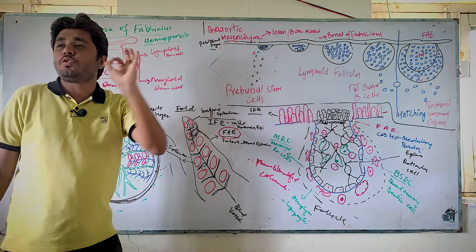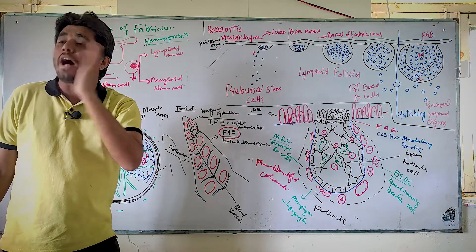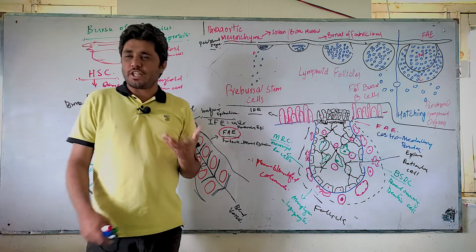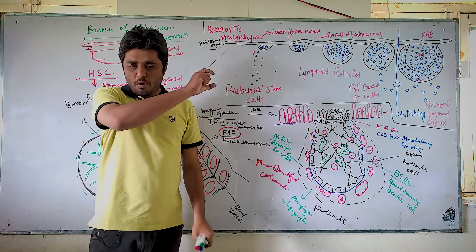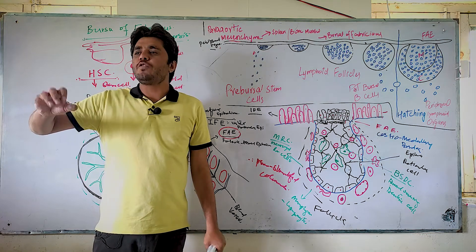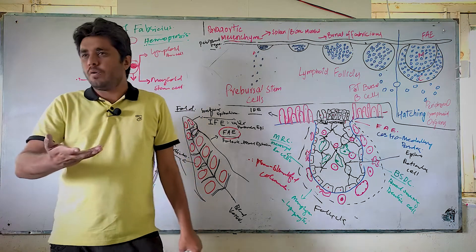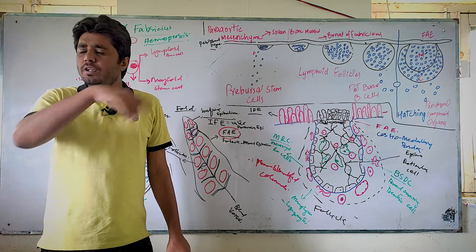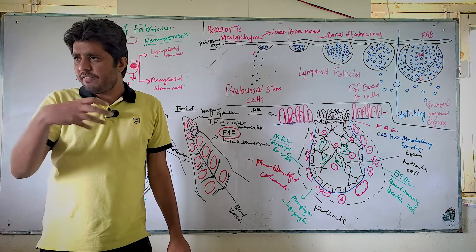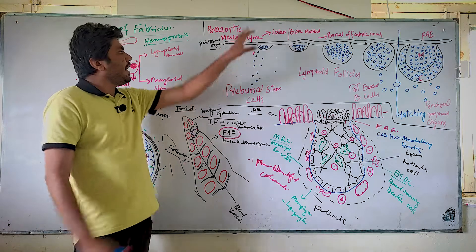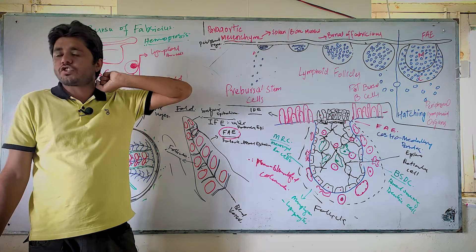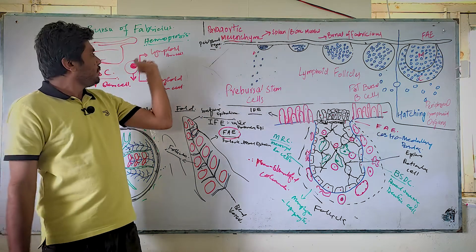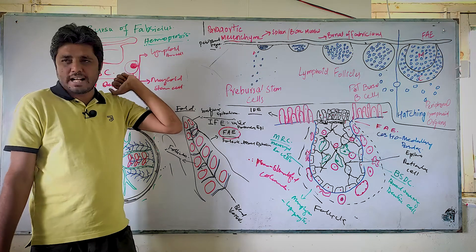This is also called the dorsal aorta — a structure which is on the long axis of the embryo, providing blood to the embryo and to the blood vessels. Here you will find stem cells of blood and lymphoid cells.